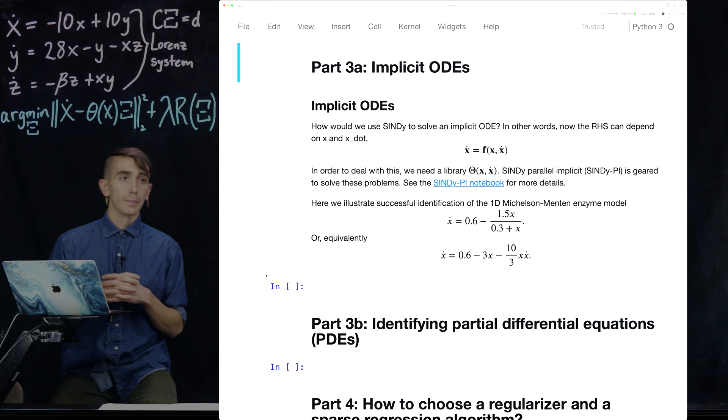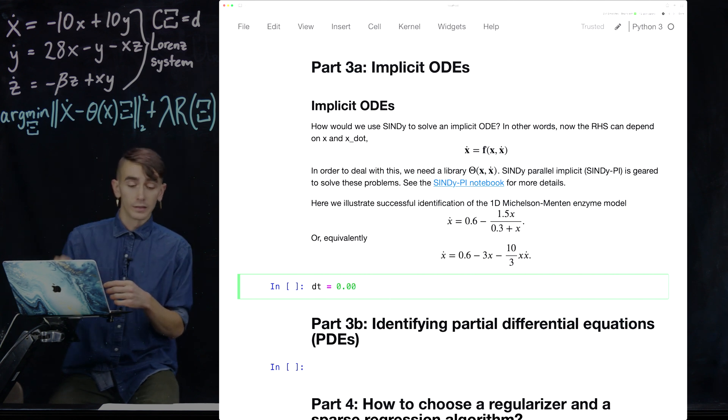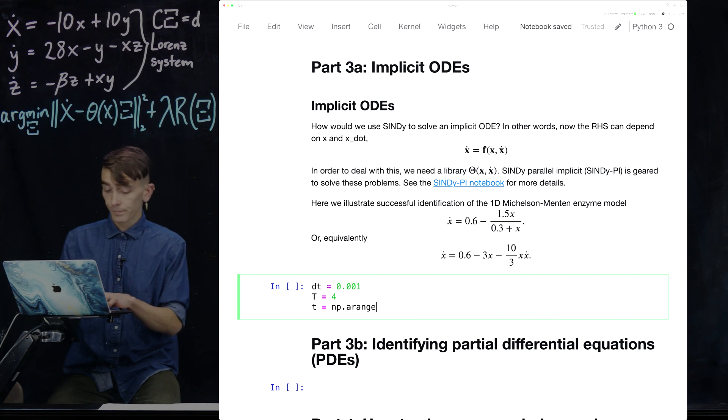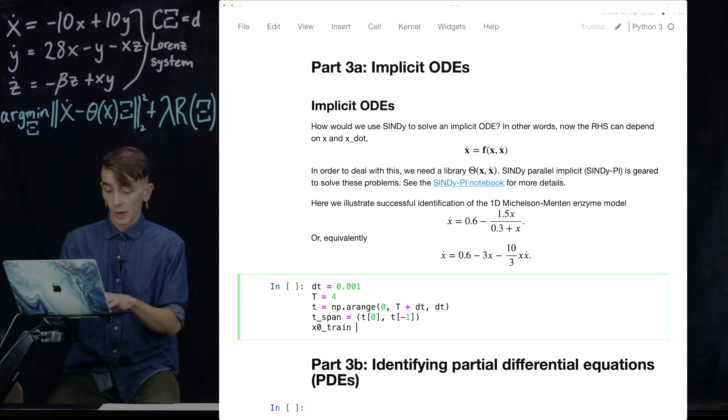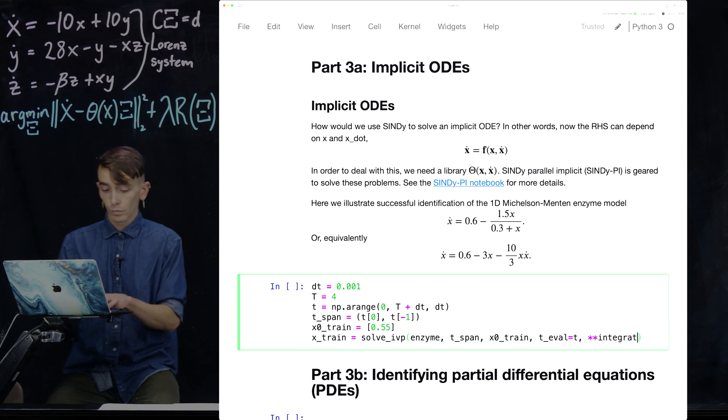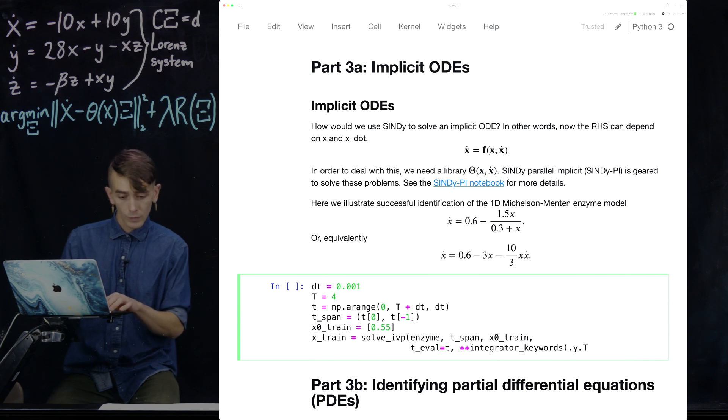And this has been implemented in PyCindy. So for this, we're going to have to load in a new system since Lorenz is not an implicit system. So let's just define a time base and get this data running. And again, we're going to use this Mickelson-Menten enzyme model here. So apologies, it's going to take a bit of time just to code up the solution to this problem. So we have some training data.